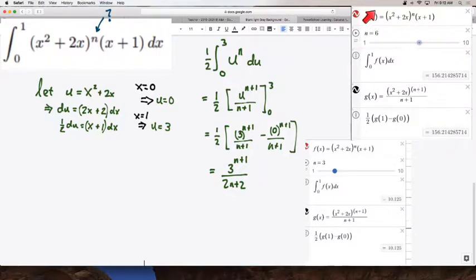So, you can see here that I have the given function, I have the integral of the function from 0 to 1, which is what the question was asking, and I see a specific value, when n equals 6.